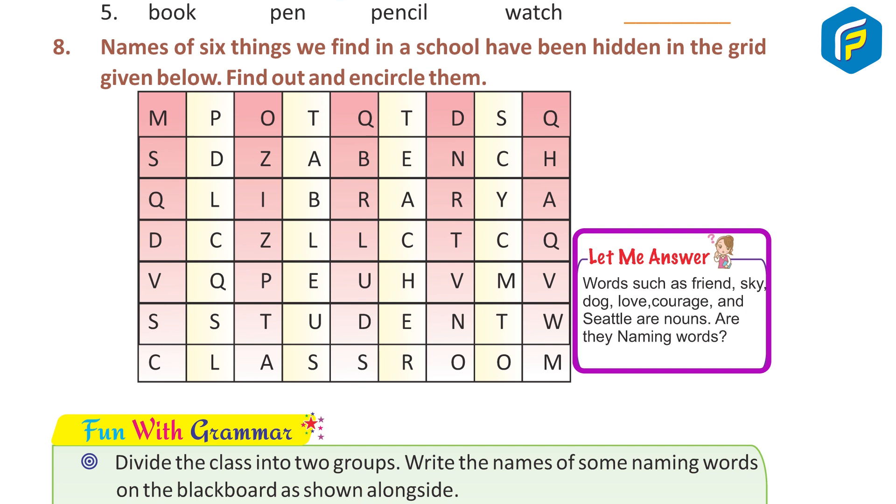Review question: Words such as friend, sky, dog, love, courage and Delhi are nouns. Are they naming words?